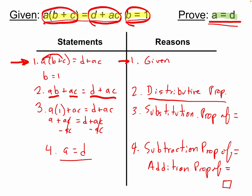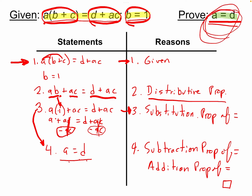For step three, I take the 1 and plug it in for b — so I substitute that right there. Now I have a times 1 plus ac equals d plus ac. Everything else stays the same, and that's my substitution property of equality. For step four: a times 1 just equals a, so I have a plus ac equals d plus ac. Between steps three and four, I subtracted ac from both sides because ac appears as a common term on both sides. They cancel out and I'm left with a equals d, which is exactly what I'm trying to prove.